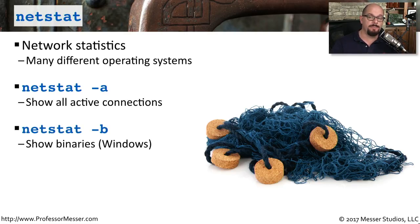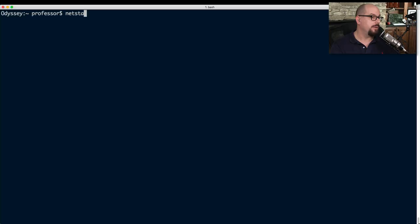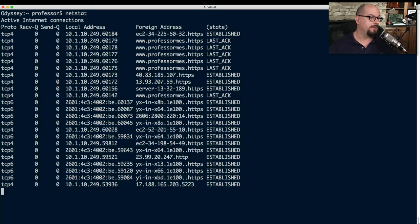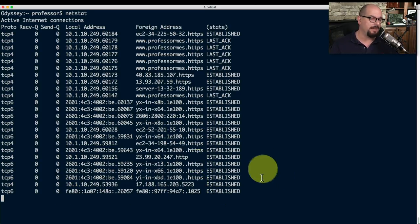On a Windows machine, you can combine netstat -a with netstat -b, which not only shows active connections but also tells you exactly which Windows binary created that connection. If you want IP addresses without resolved names, you can run netstat -n. Running netstat with no parameters shows all network communications — you can see connections out to professormesser.com and other web services, and it updates those on screen as it works through active connections.